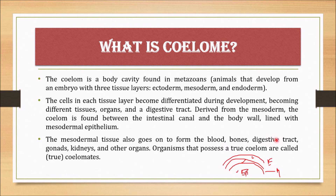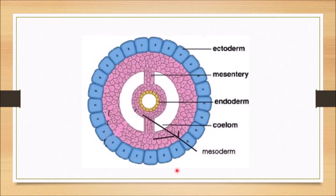The digestive tract, gonads, kidneys, and other organs are found in the coelom. We can see this coelom in the embryonic condition — we can observe the coelom through its development.